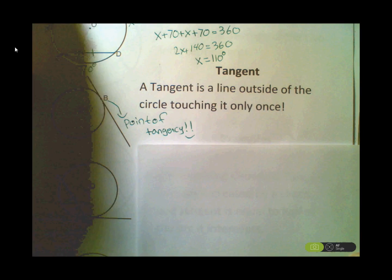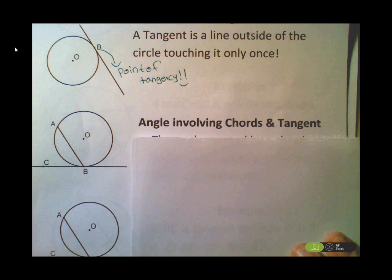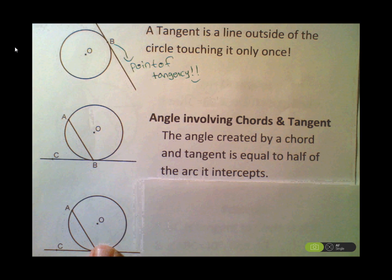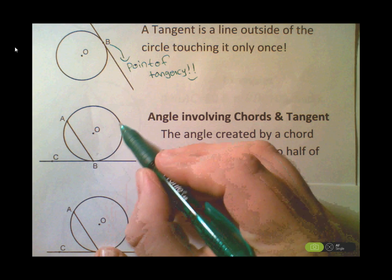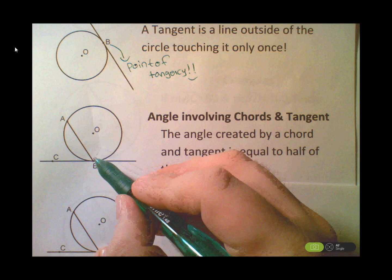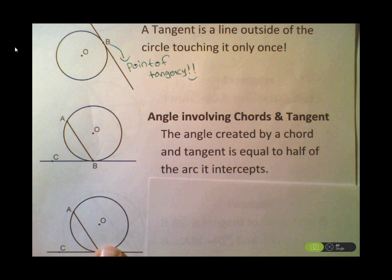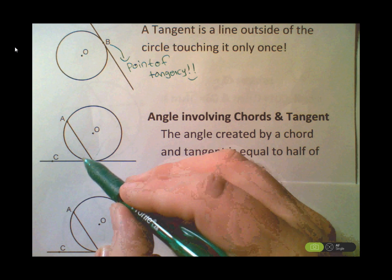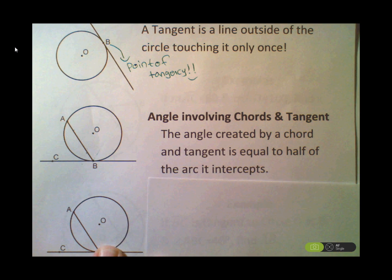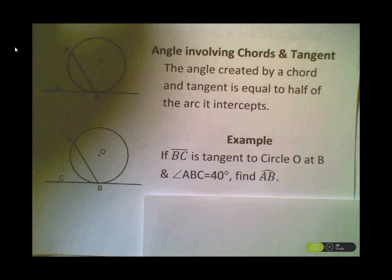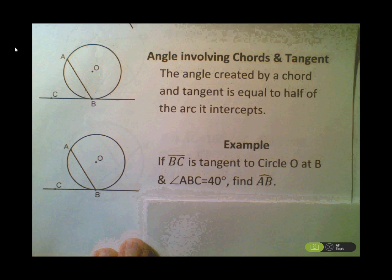Now let's look at the Chord-Tangent Angle Theorem. It's very much like an inscribed angle — the same concept. The inscribed angle has two chords meeting at the edge of the circle. In this case, they still meet at the edge but go away from the center. This angle is still equal to one-half of the arc it intercepts.